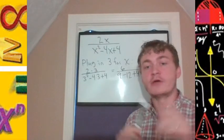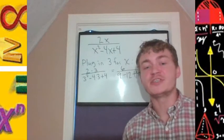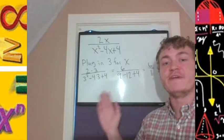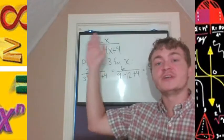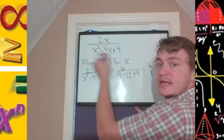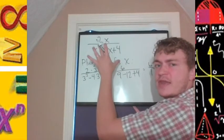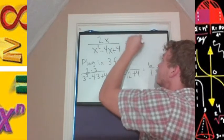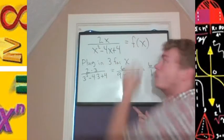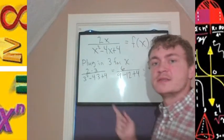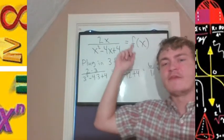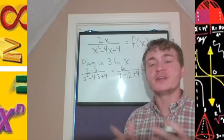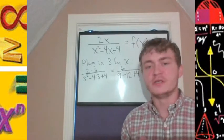For later when we discuss functions, we would say we evaluated the function at 3. If we give this some name, we can call it f of x, where f represents a function.